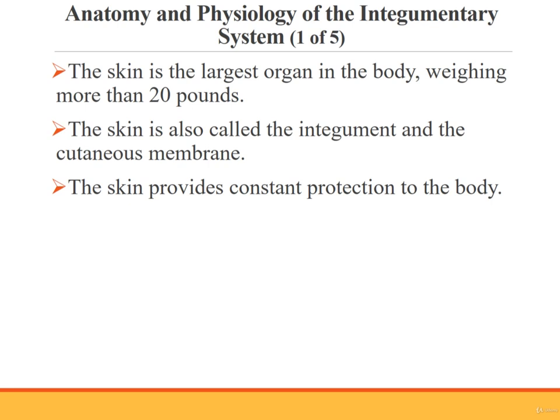The primary organ of the integumentary system is the skin. Accessory organs are the sweat glands, sebaceous glands, nails, and hair. The skin is the largest organ in the body, and it weighs more than 20 pounds in the average adult. In addition to being the largest organ, it has one of the toughest jobs, providing the body with constant protection.